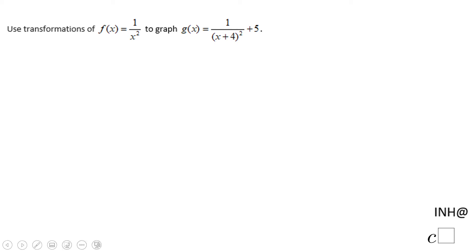Welcome or welcome back at I Need Help at C Square. In this example we have a rational function g(x) = 1/(x+4)² + 5 and we need to use transformation of f(x) = 1/x² to graph it.